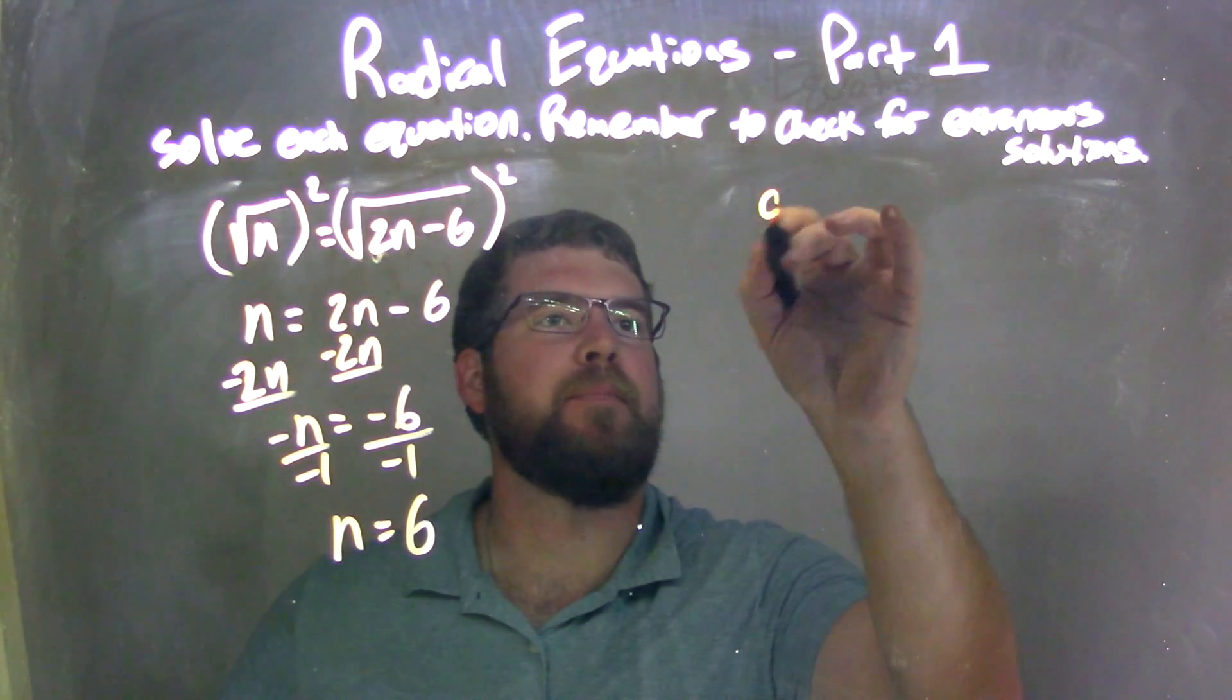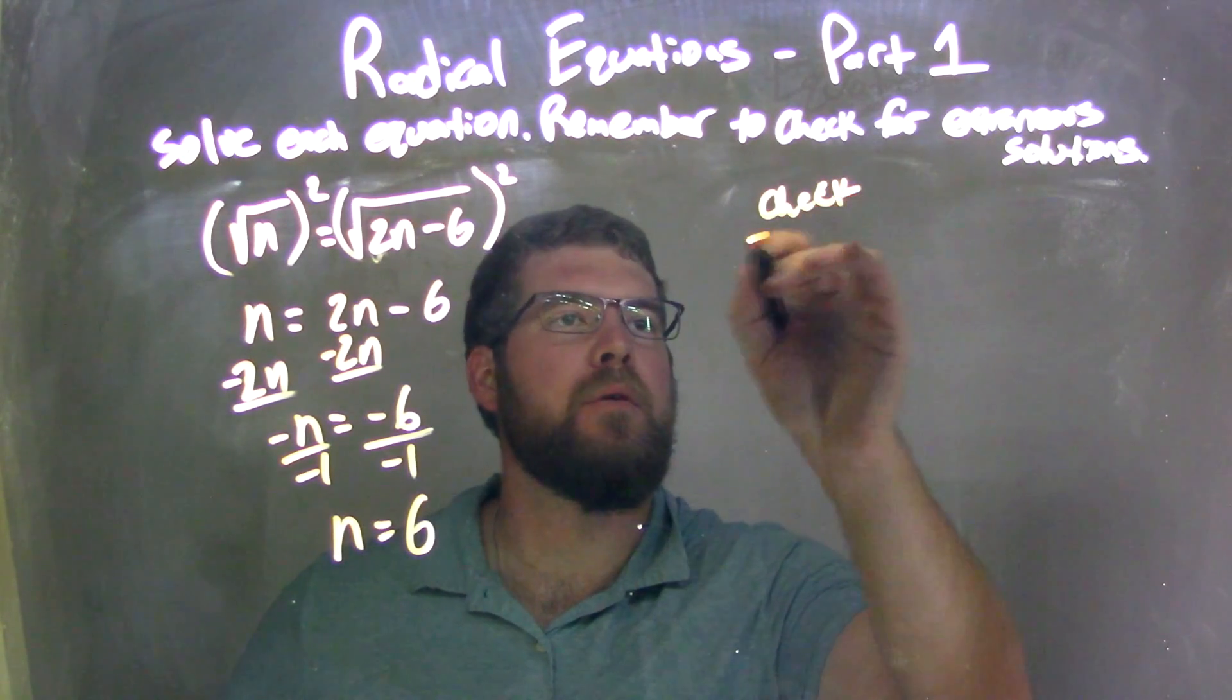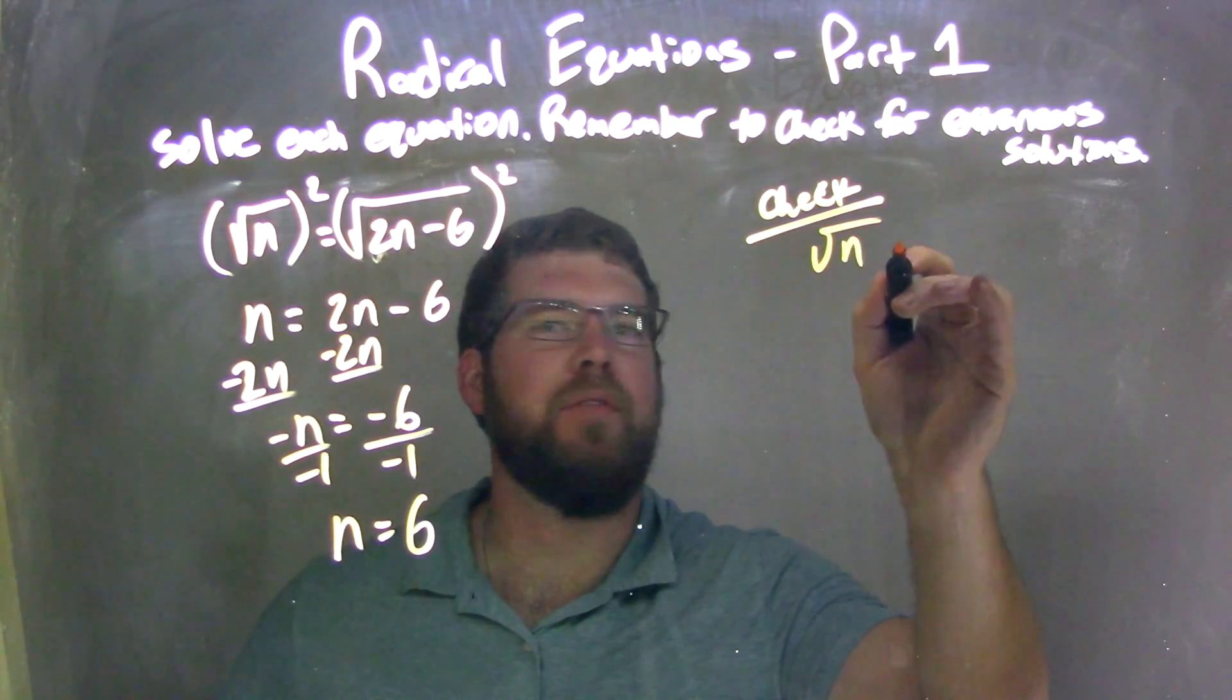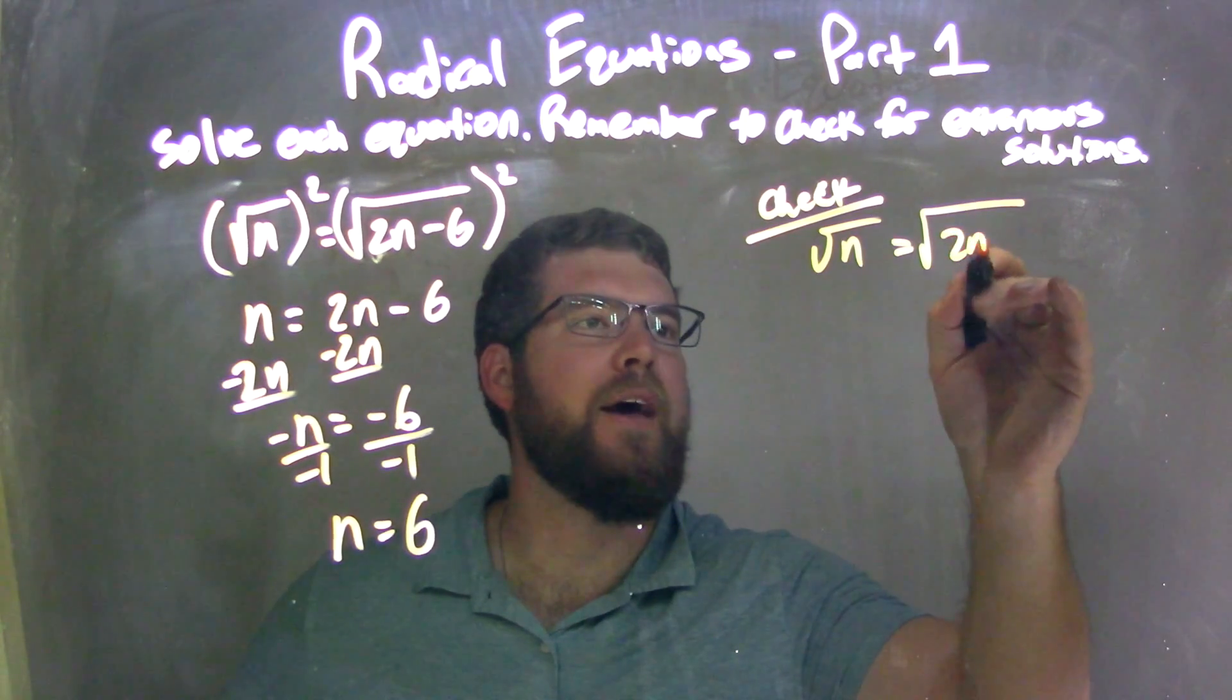Fantastic, but we need to check. So let's do our check. By checking, I'm going to rewrite my equation. Square root of n equals the square root of 2n minus 6.